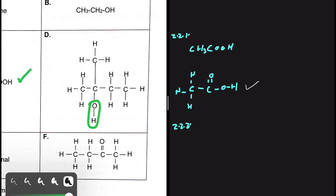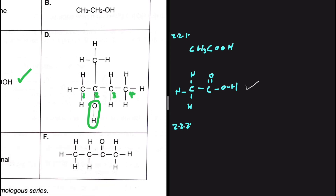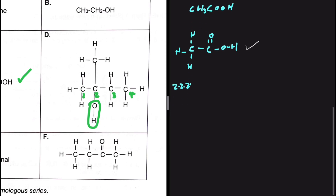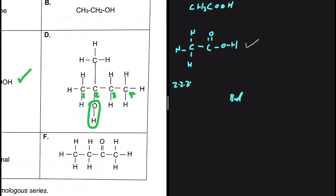Where do we start numbering our carbons? Closest to the functional group. Counting from the left we get one, two, three, four; counting from the right we get one, two, three. So we start from the right-hand side, giving us the lower locant, and we identify butan-2-ol.